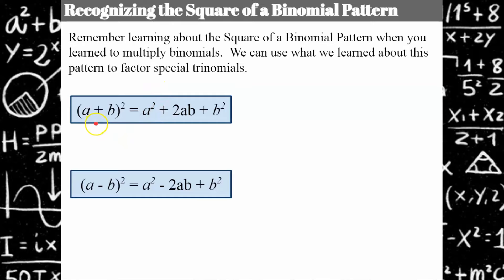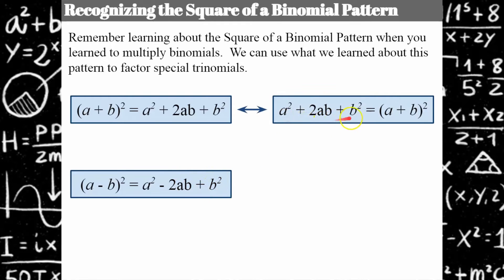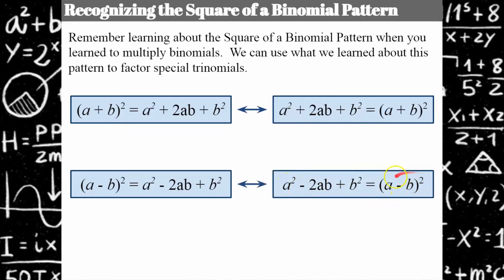In the previous lessons when you learned to multiply, you learned that (a + b)² would always be in this pattern: a² + 2ab + b². And if you had (a − b)², it would be in this pattern: a² − 2ab + b². So we're going to use these in reverse. If I can recognize that I have a trinomial in this square of a binomial pattern, I know that factored it's going to be (a + b)² or (a − b)².